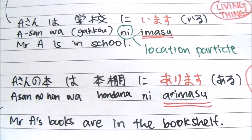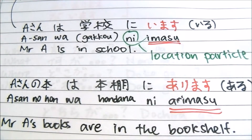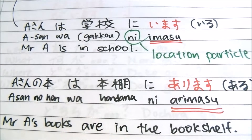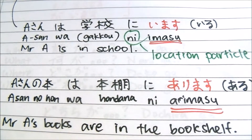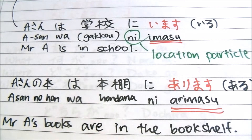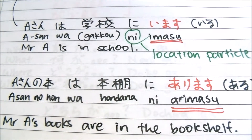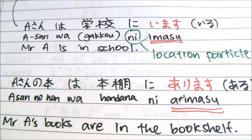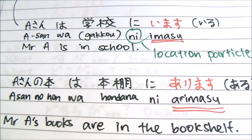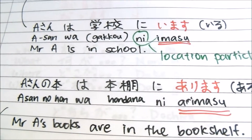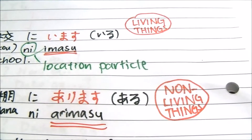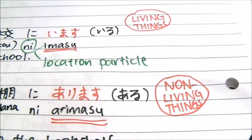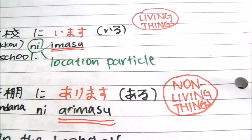So what's the difference between 'imasu' and 'arimasu'? In sentence 1 of your lesson plan, you'll see 'koneko' used with 'imasu' as well. Basically, 'imasu' is for living things, and 'arimasu' is for non-living things.